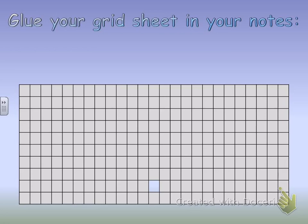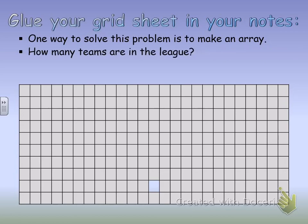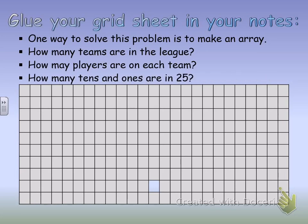Go ahead and glue in your grid sheet. One way to solve this problem is to make an array. How many teams are in the league? Looking back at the problem, we have 10 teams in the league and 25 players on each team. How many 10's and 1's are in 25? When we look at the place value of 25, the 5 is in the 1's place and the 2 is in the 10's place. So I have two groups of 10, which is 20, and I have five 1's.